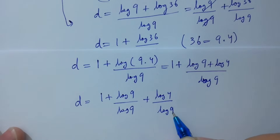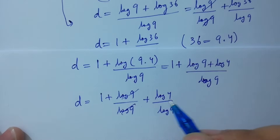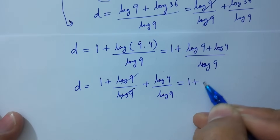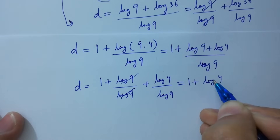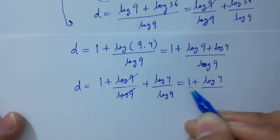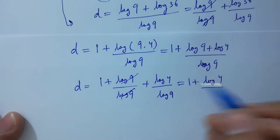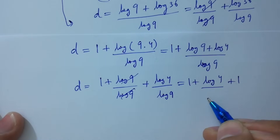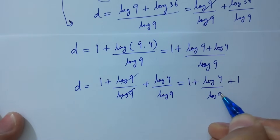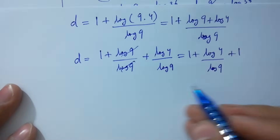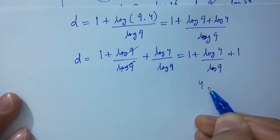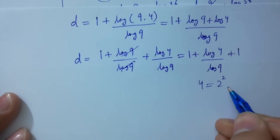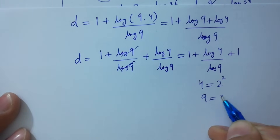d equals 1 plus log 9 over log 9 plus log 4 over log 9. Log 9 and log 9 will be cancelled, leaving 1 plus log 4 over log 9.